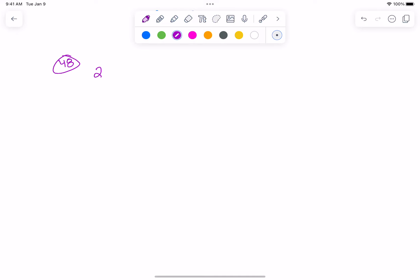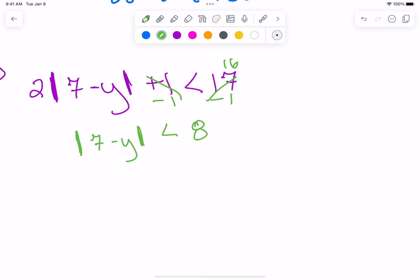48. Absolute value of 7 minus y plus 1 is less than 17. Okay, what first? Minus 1, which is 16 divided by 2. Is less than 8, right? Can I do that? I skipped a bunch of steps there. Is that okay? Or is that confusing?